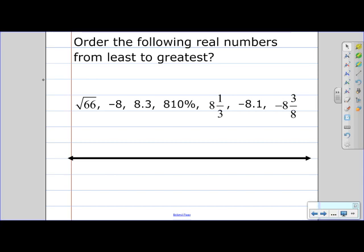Order the following real numbers from least to greatest. When working with problems like these, I find it best if we convert all of the numbers to decimals. So let's go up to our calculator to convert the square root of 66 to a decimal.